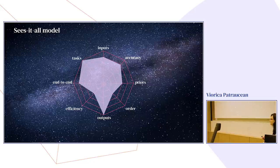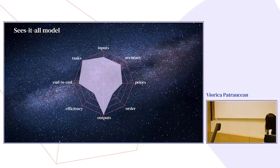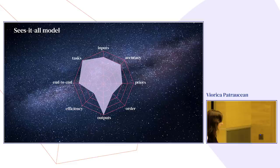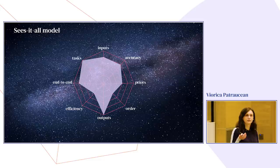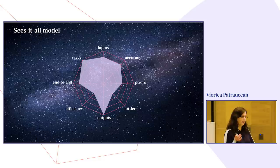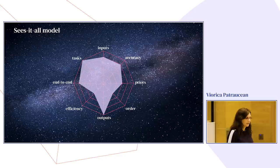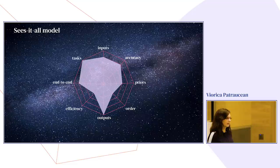Designing a system that achieves human-level scene understanding is a very challenging task because there are so many factors to take into account — different tasks like object detection, pose estimation, and camera position; the order in which to tackle them; different inputs and output structures; priors about the world versus end-to-end learning; and the trade-off between accuracy and efficiency. The search space is huge and there is really a lot of work to be done.